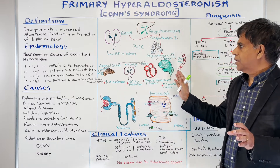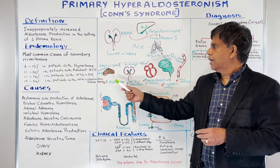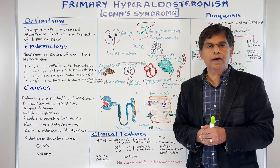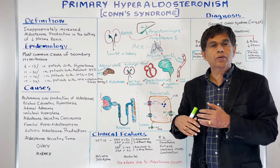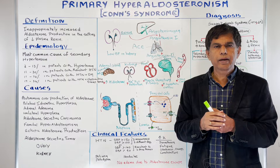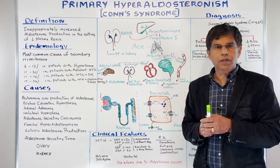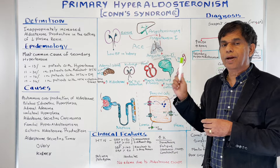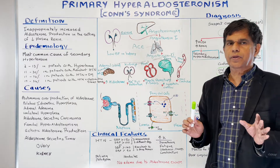Let's look at the pathophysiology of aldosterone and renin. Aldosterone is produced from the adrenal gland. It is a lipophilic hormone that binds to the mineralocorticoid receptor. These MR receptors are located in many different places: the kidney, the heart in cardiomyocytes, neurons in the brain, and vascular smooth muscle in blood vessels. The main mechanism we are interested in is how aldosterone works on the kidney.